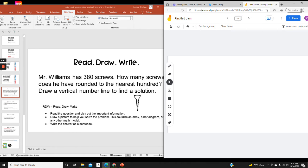So we're going to do the next part of the read, draw, write process, which is to draw a vertical number line. So the question is in regard to the number 380. The number in the hundreds place is 3. So I know that my first endpoint is 300. And the next 100 up from 300 is 400. So my next endpoint is 400. I know that 380 is between 300 and 400.